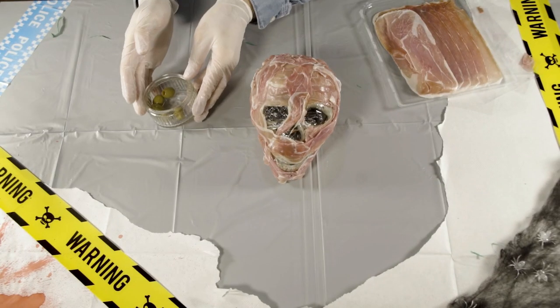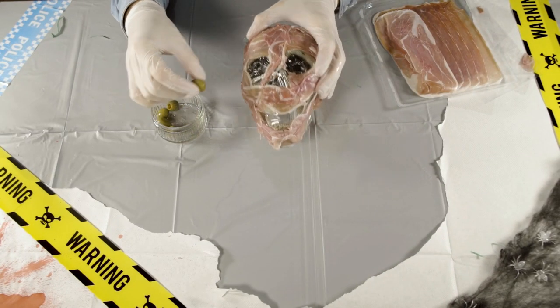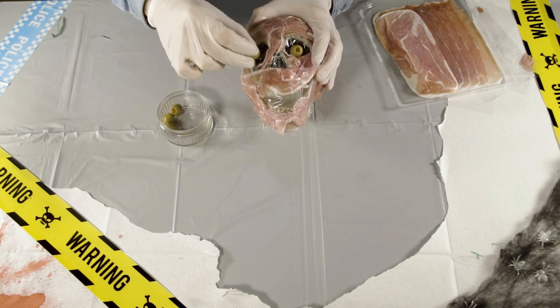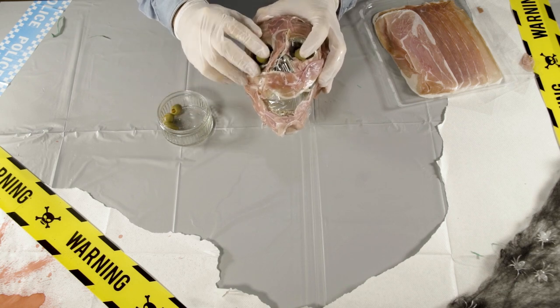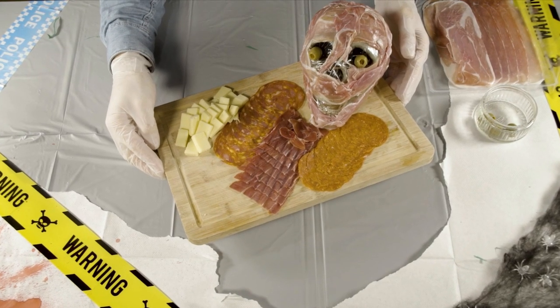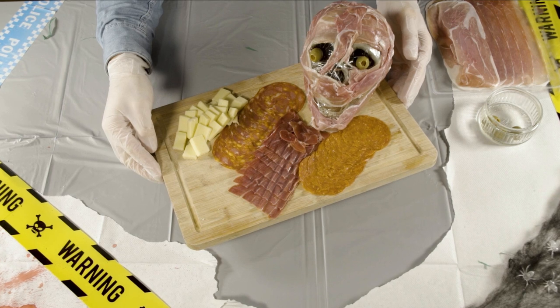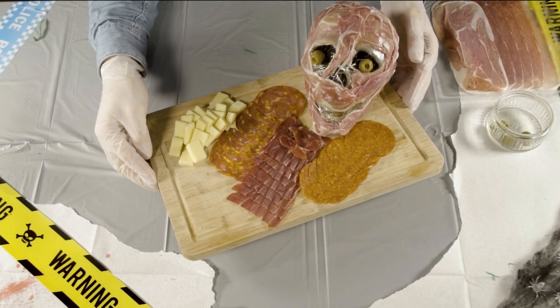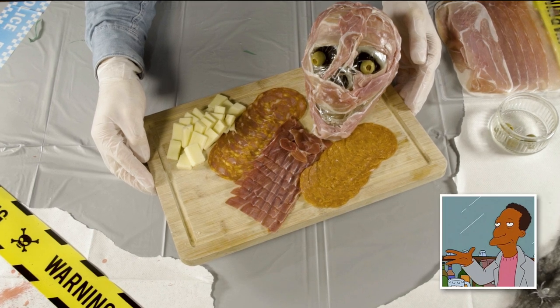Once the skull is completely covered, pierce a hole in the saran wrap covering the eye sockets, and insert two stuffed green olives, which look like petrified eyeballs. Pop your Meathead in the center of a large serving platter, surround it with a selection of cheese or other snacks, and there you have it, a scrumptious centerpiece your guests will be head over heels for.